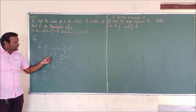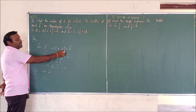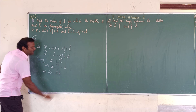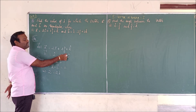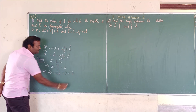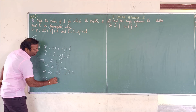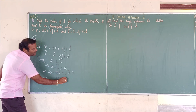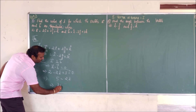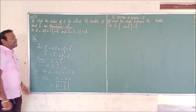Multiplying corresponding components: the i cap components are 2 and 1, so 2 into 1 is 2. The j cap components are lambda and minus 2, giving minus 2 lambda. The k cap components are 1 and 3, giving plus 3. So: 2 minus 2 lambda plus 3 equals 0. That gives 5 minus 2 lambda equals 0, so lambda equals 5 by 2. This is the value of lambda. The second subdivision you can solve by yourself.